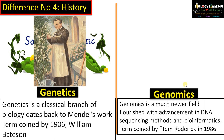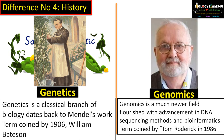Whereas genomics can be called a branch of genetics — it is a newer field that flourished with the advancement of DNA sequencing methods, especially Sanger's method, and bioinformatics tools for analyzing sequences. The term genomics was coined by Tom Roderick in 1980. These are the basic differences between genomics and genetics.